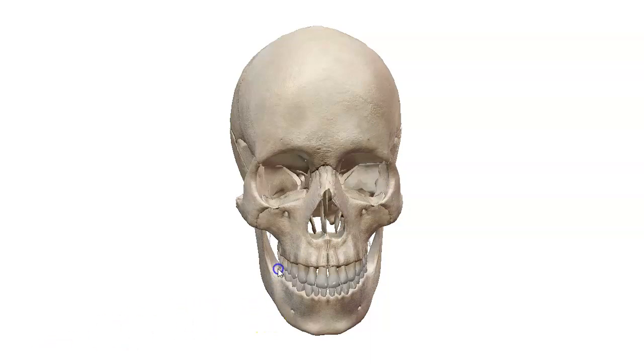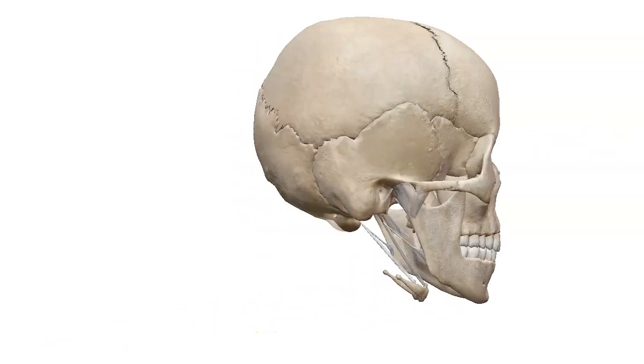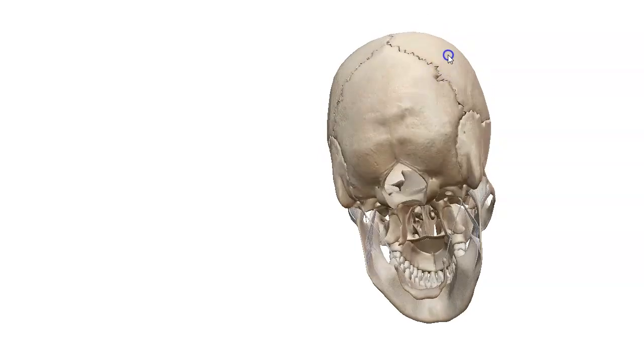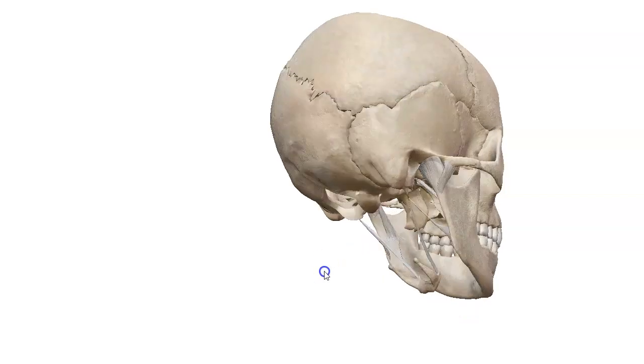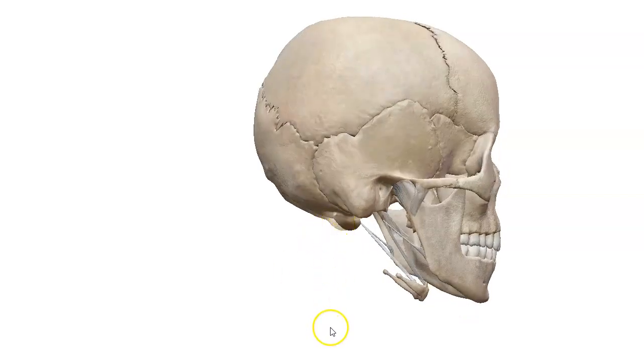So this kind of sums up the anatomy of the skull. Actually I forgot one little hole opening right here. Another foramen, this is called the foramen magnum and this is where the spinal cord is going to come out. Alright, I think that's about it. If you have any questions feel free to reach out.